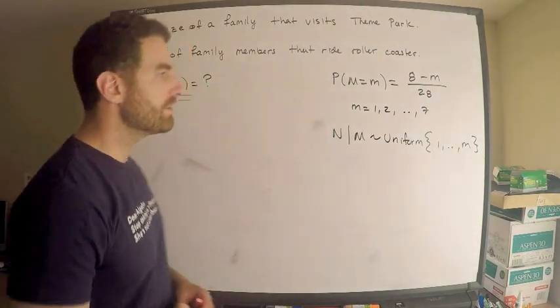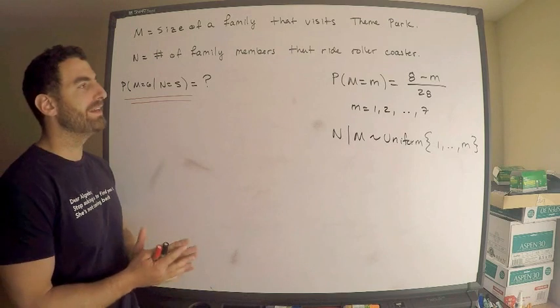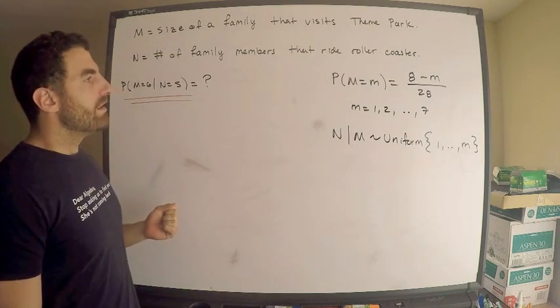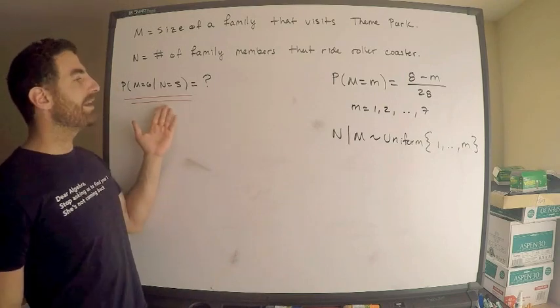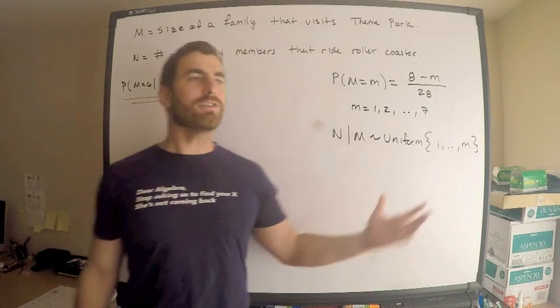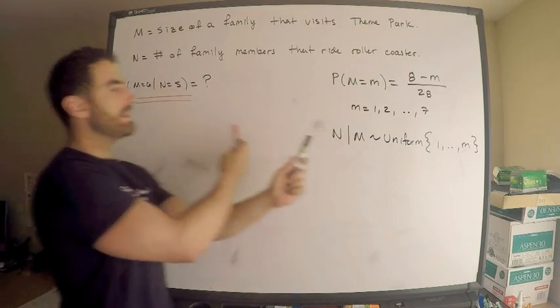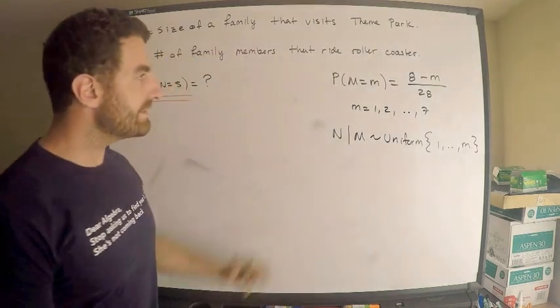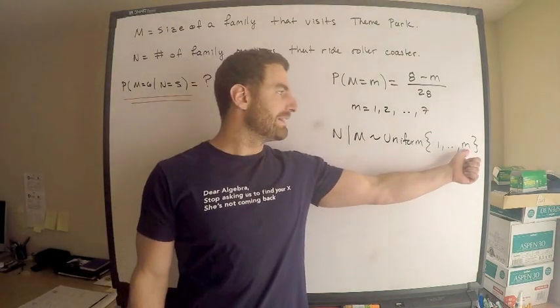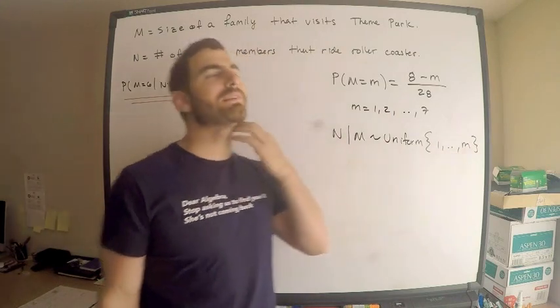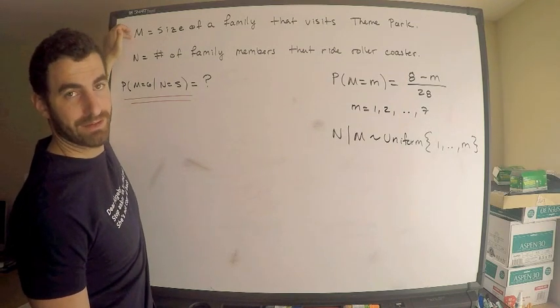A couple of things I want to mention about this. First of all, if you're looking for a conditional probability, most likely you're going to have to use Bayes theorem or possibly law of total probability somewhere along those lines. Because of that, you should be thinking I need some other conditional distribution, and also you need these variables to be flipped. Notice these two variables need to be flipped in order to use Bayes theorem. Another thing you should think to yourself is that of course N has to be less than or equal to M, because how are you going to have family members riding a roller coaster? There cannot be more than the number of people in the family. So hopefully that makes sense.